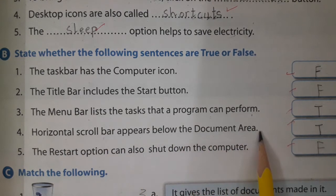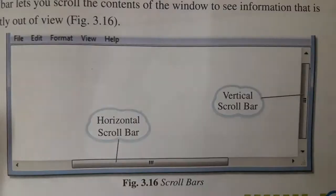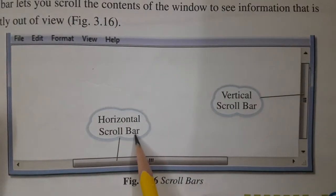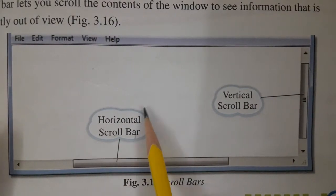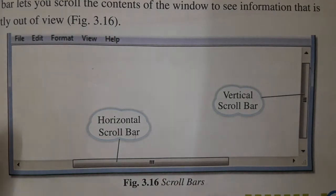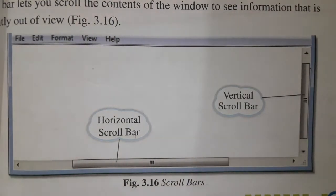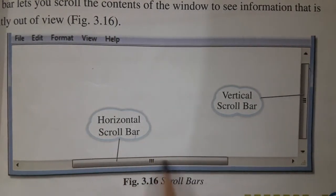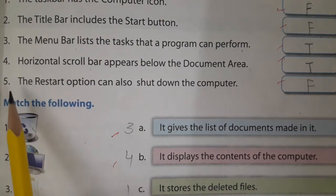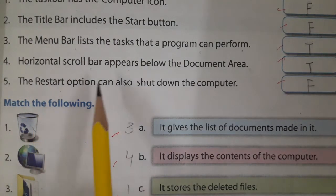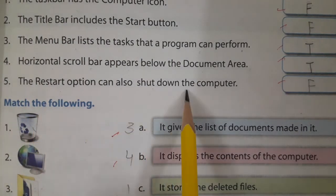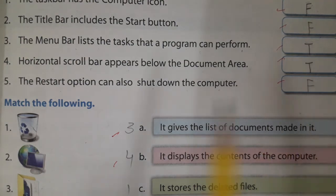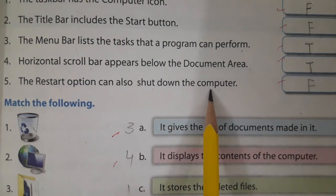Number four: the horizontal scroll bar appears below the document area — this is the horizontal scroll bar and it appears below the document area — true. Number five: the restart option can also shut down the computer — yes, true.